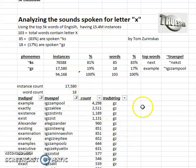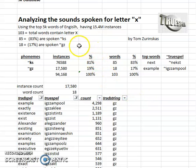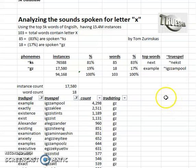And there you go — that's the analysis of how we say the letter X in U.S. English. It's mainly KS as in 'next,' and then 17% GZ. This is a TrueSpell analysis. You can look up TrueSpell at truespell.com.